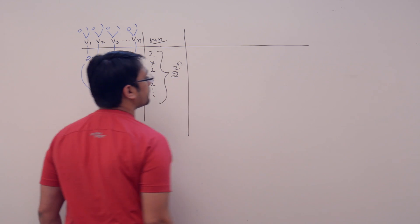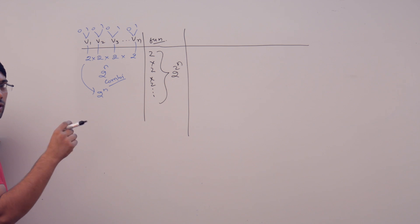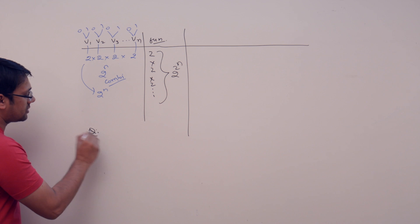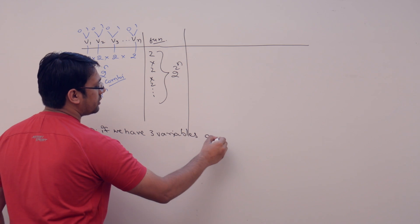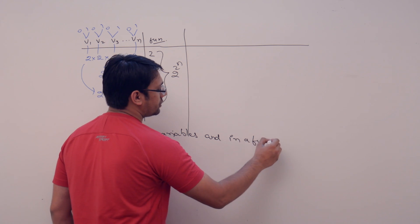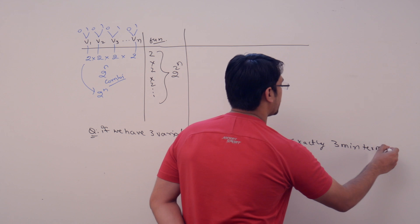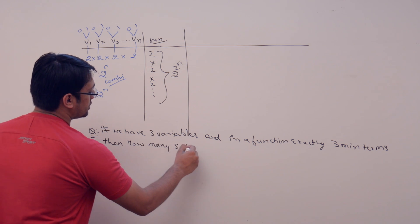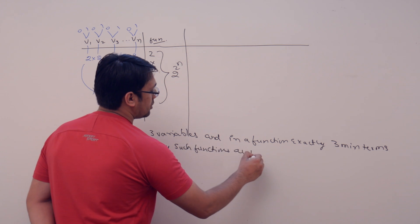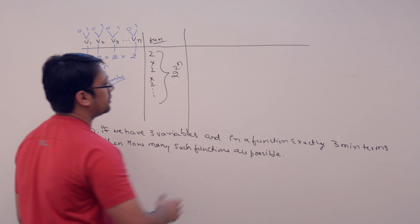Now let me modify the previous question. Let us make it easier first, then a little bit harder. Assume the question is like this: if we have three variables and in a function there are exactly three minterms, then how many such functions are possible?